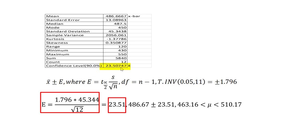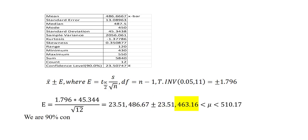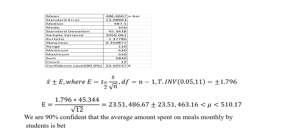If you look at the Excel output, you will see it in that last cell — it is exactly the same value. To get the upper confidence limit, I will take my mean, which is 486.67, plus the margin of error 23.51, which gives me 510.17. The lower limit will be 486.67 minus the margin of error 23.51, which gives me 463.16. Hence, we are 90% confident that the average amount spent on meals monthly by students is between $463.16 and $510.17.